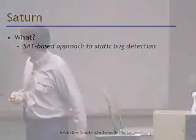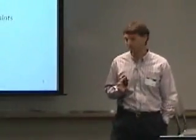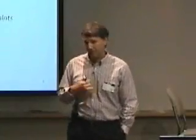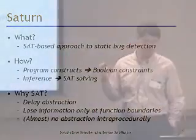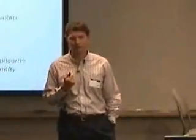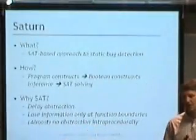So what is Saturn? Saturn is a SAT-based approach to static bug detection. What we do is translate program constructs into Boolean constraints, and inference — the actual computation of the properties we're interested in — is done by SAT-solving queries. We ask queries of these formulas asking if they're satisfiable under certain circumstances. The real technical motivation: why should SAT be good for this? After a lot of thinking, I think the number one thing is to delay abstraction.